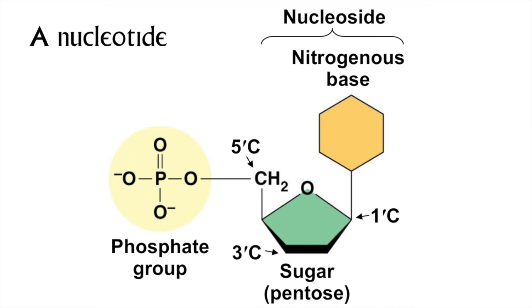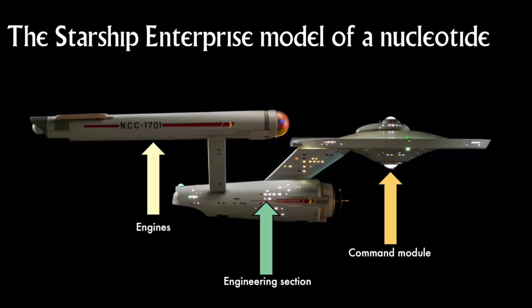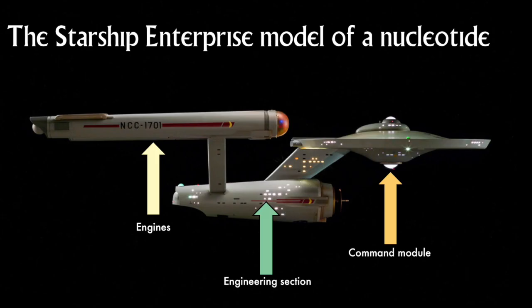To remember the functions of the three parts of a nucleotide, I will invoke the Starship Enterprise model. It is made up of three parts: the command module, the engineering section, and the warp engines. The command module is where big decisions are made — this is the most variable part of the nucleotide and the part that directs the encoded message. The engineering section holds the ship together; the 5-carbon sugar essentially does the same thing. The engines make everything go, and phosphate groups are a great energy source — in nucleic acids that energy is channeled into forming bonds with the next nucleotide.